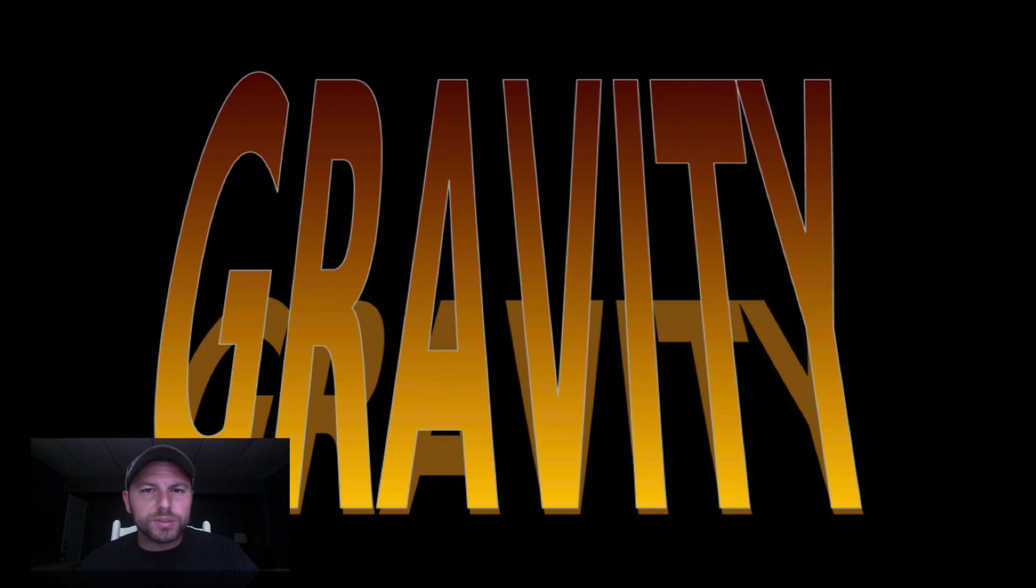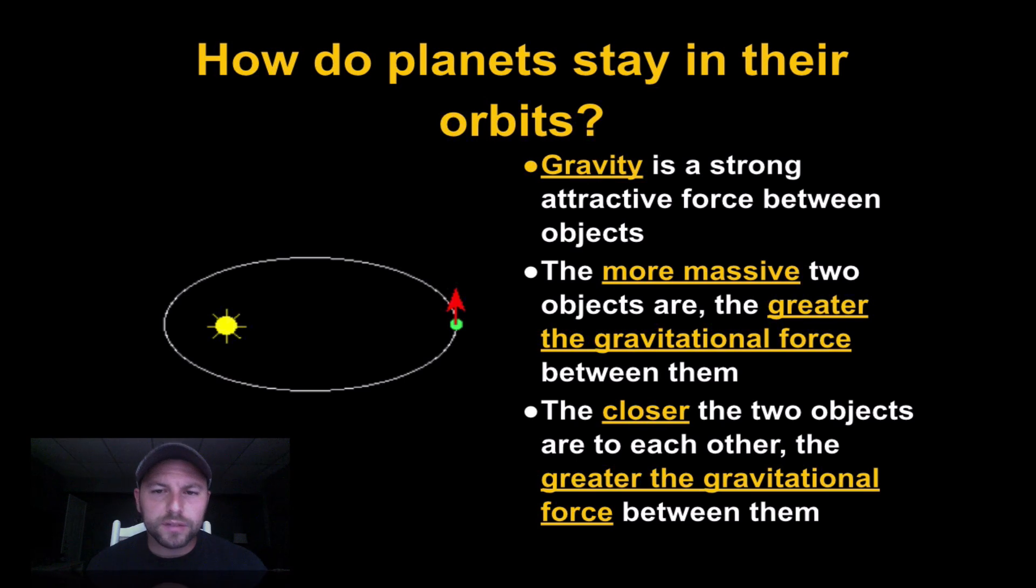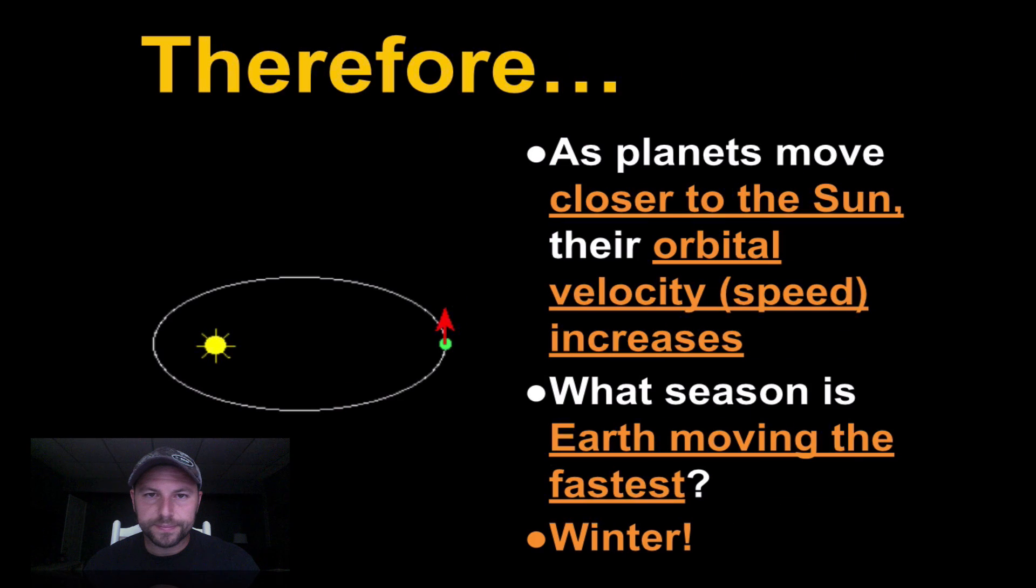Remember, gravity is what's keeping us in orbit around the sun. It's a strong attractive force between objects. The more massive the objects are, the greater the gravitational force. And also the closer two objects are, the greater the gravitational force between them. So as a planet moves closer to the sun, it's going to speed up. That gravity's pulling it in. And if we take a look, it's actually winter that we're closest to the sun and we're moving fastest.